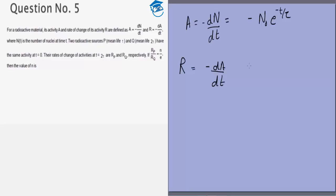First of all, we can find R. R is minus dA by dt, that means R equals the derivative of n by dt - the double derivative of n with respect to time. R will come out to be n0 e to the power minus t by tau times minus 1 by tau.